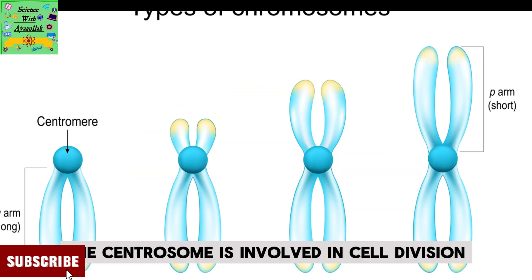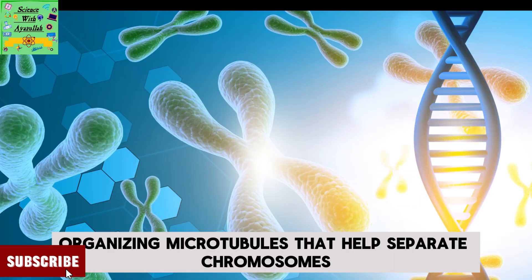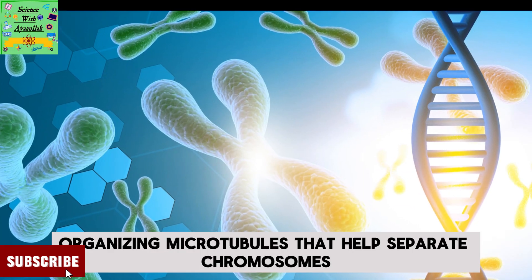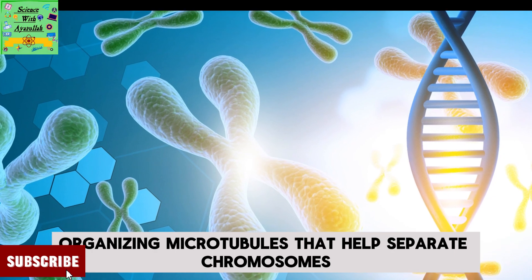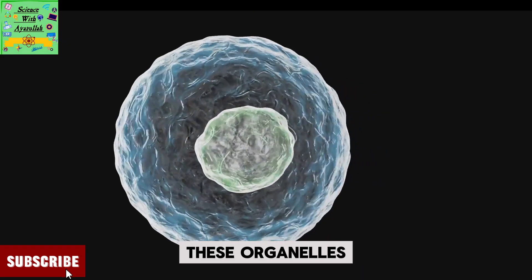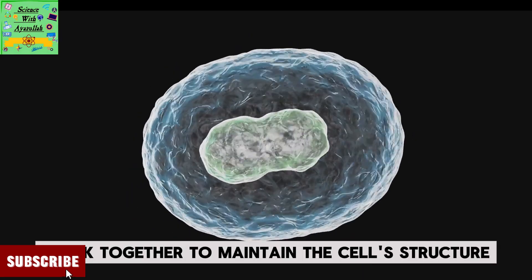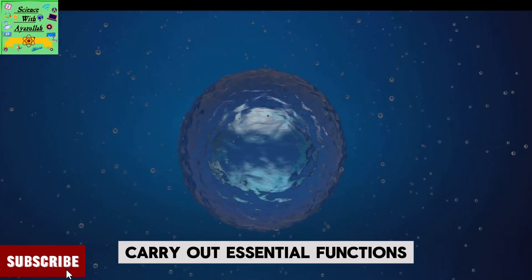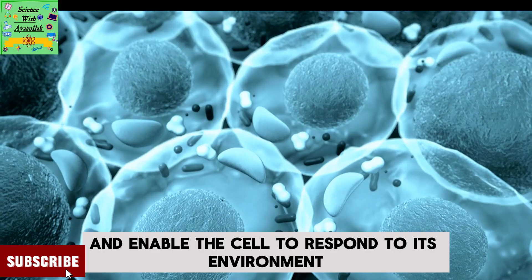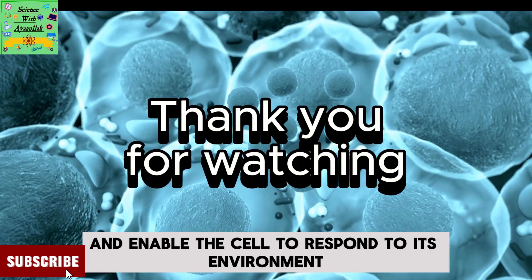The centrosome is involved in cell division, organizing microtubules that help separate chromosomes. These organelles work together to maintain the cell structure, carry out essential functions, and enable the cell to respond to its environment.